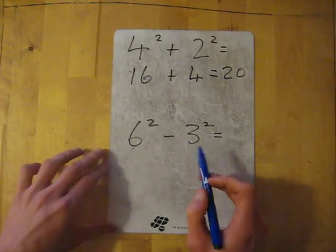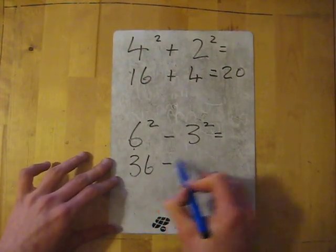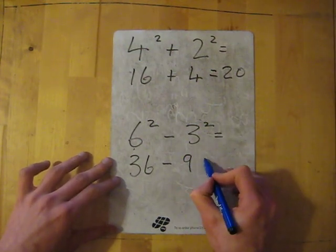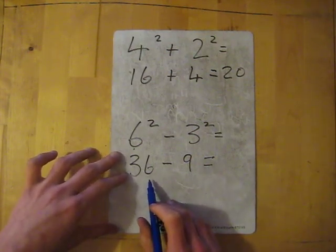3 squared which is 3 times 3 which is 9. 36 take away 9 equals 27.